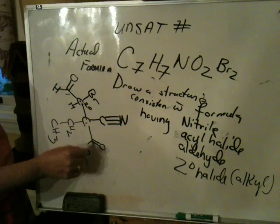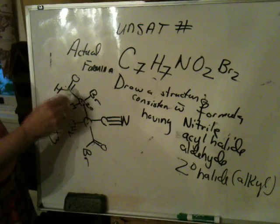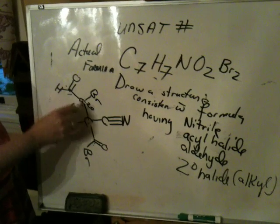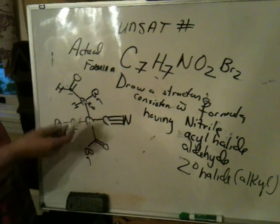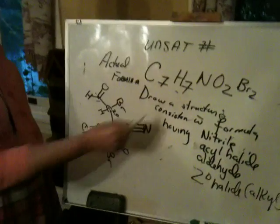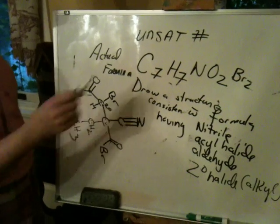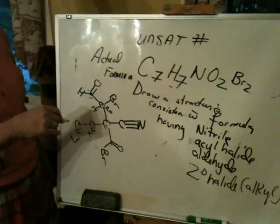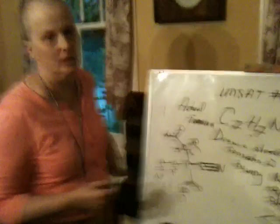Let's see if we've got everything. We've got an unsaturation of four. We've got both halides. We've got both oxygens. We've got the nitrogen. And we have seven carbons: 1, 2, 3, 4, 5, 6, 7. So that works. Notice what I did — I got all the functional groups in first before I ran out of carbons, then finished up with the balance. I'll see you in class tomorrow.